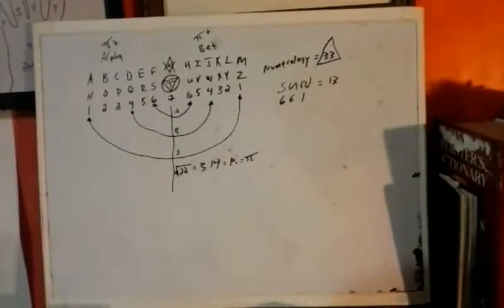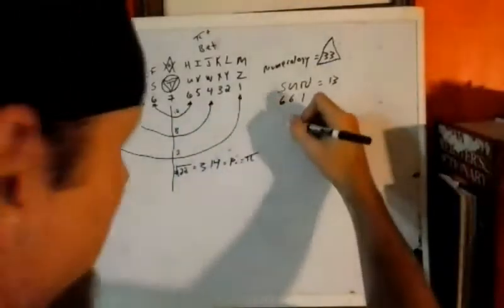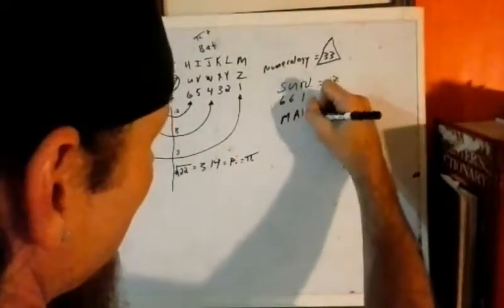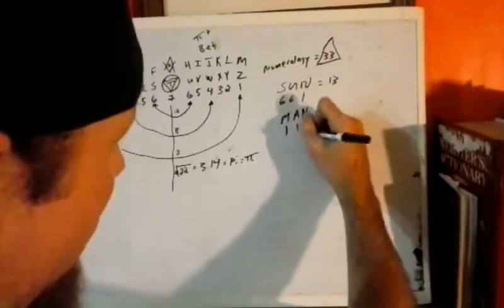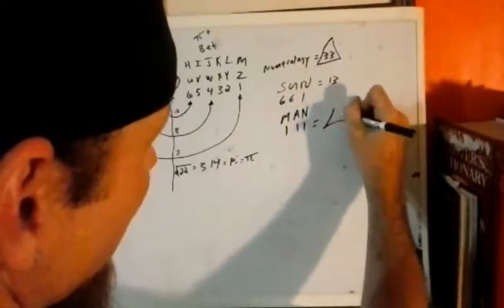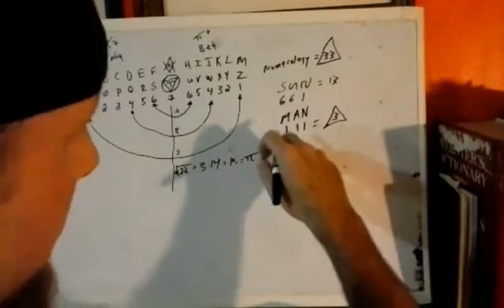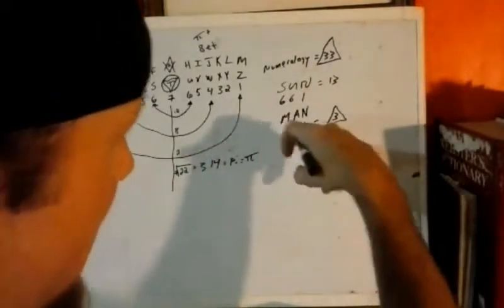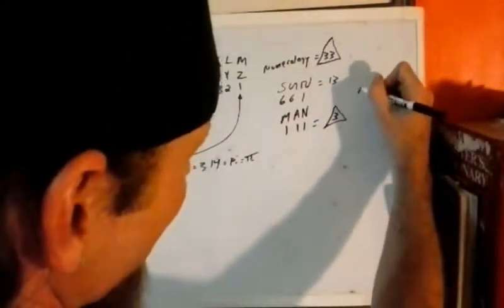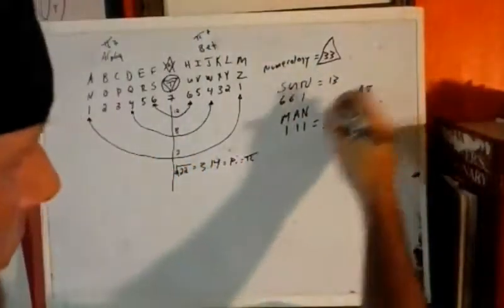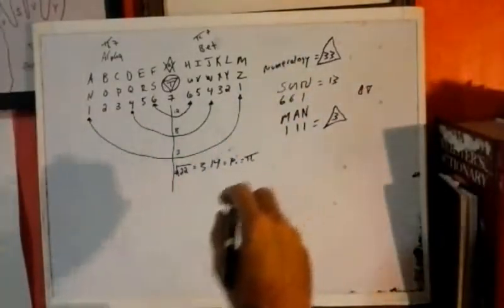And you could take the trinity, for example, also would be man, which is just 1, 1, 1, equals 3. It's the trinity right there. Man. And an N is just, it means the N stands for son. You got the mother, the father would be Adonis, the A, and the N. An N is made up of just two triangles. One pointing up, one pointing down. It makes an N when you put them together.